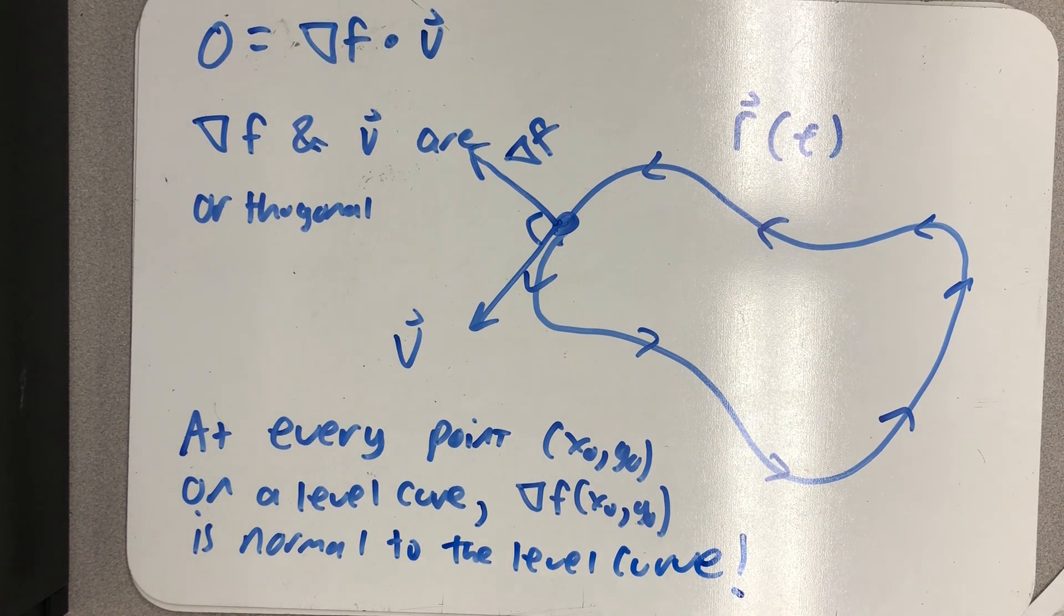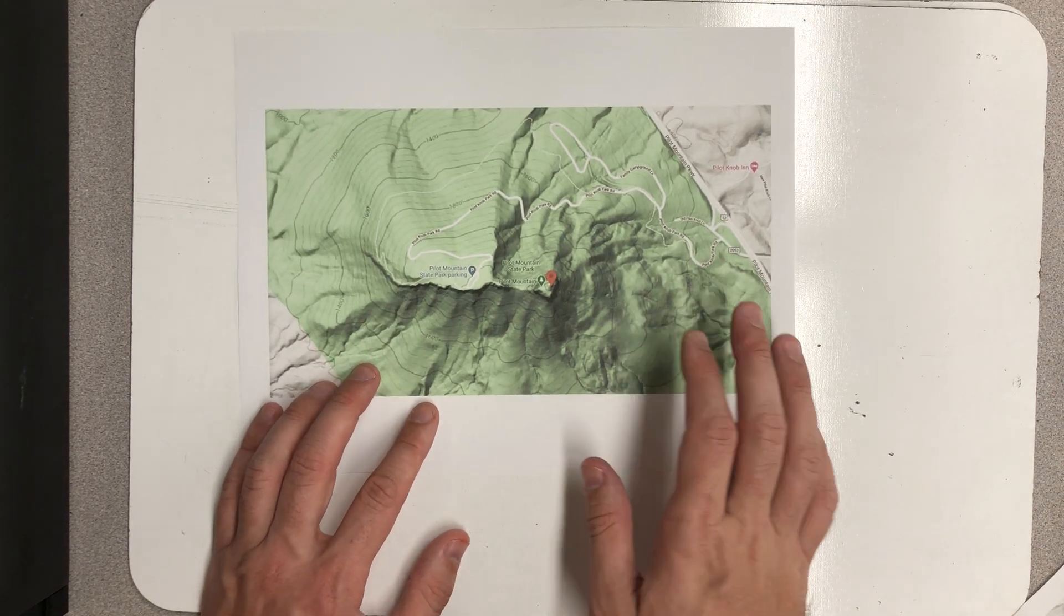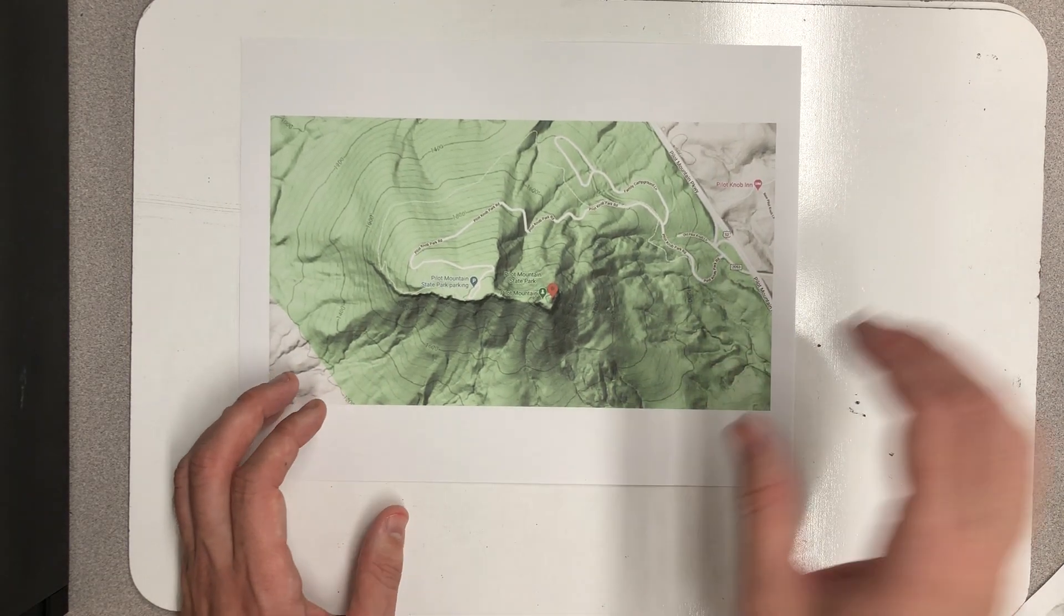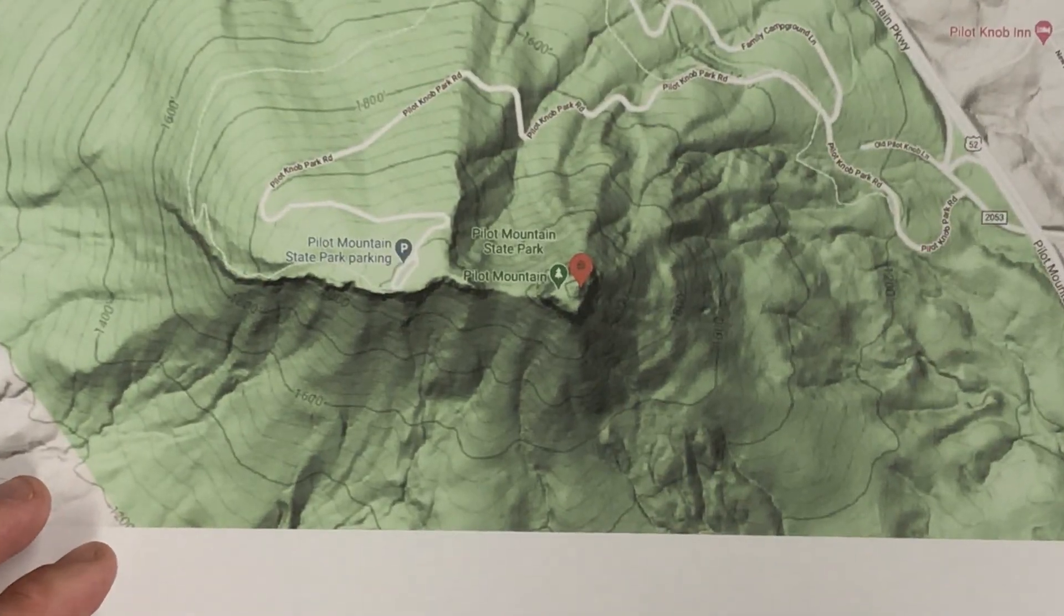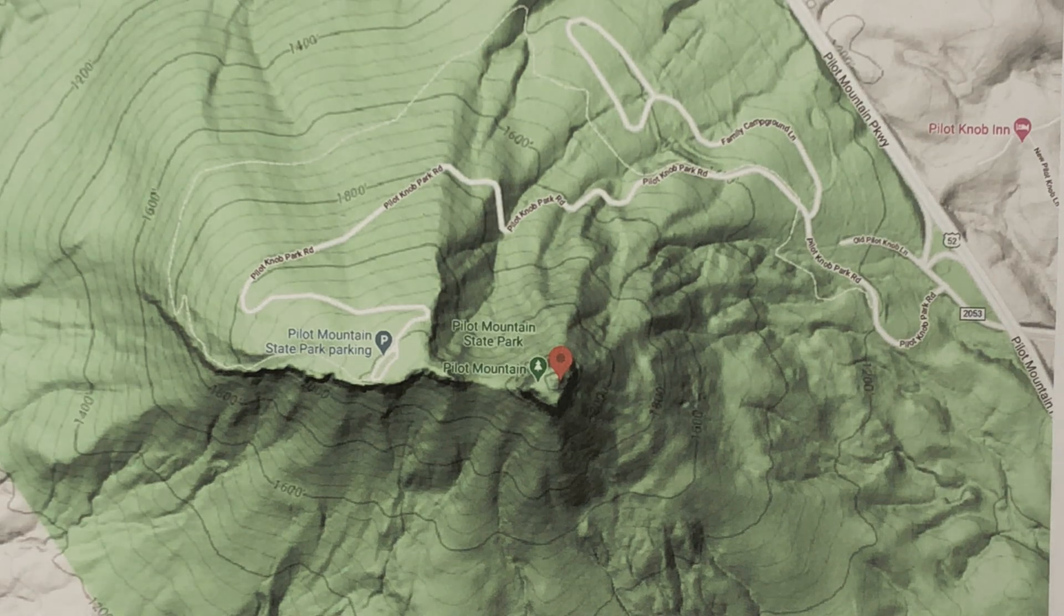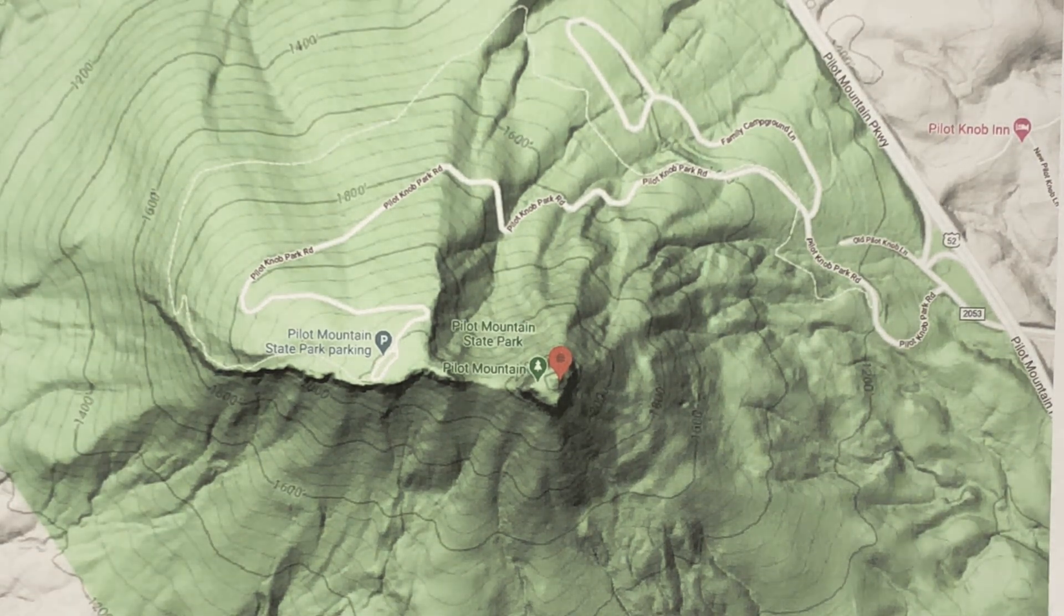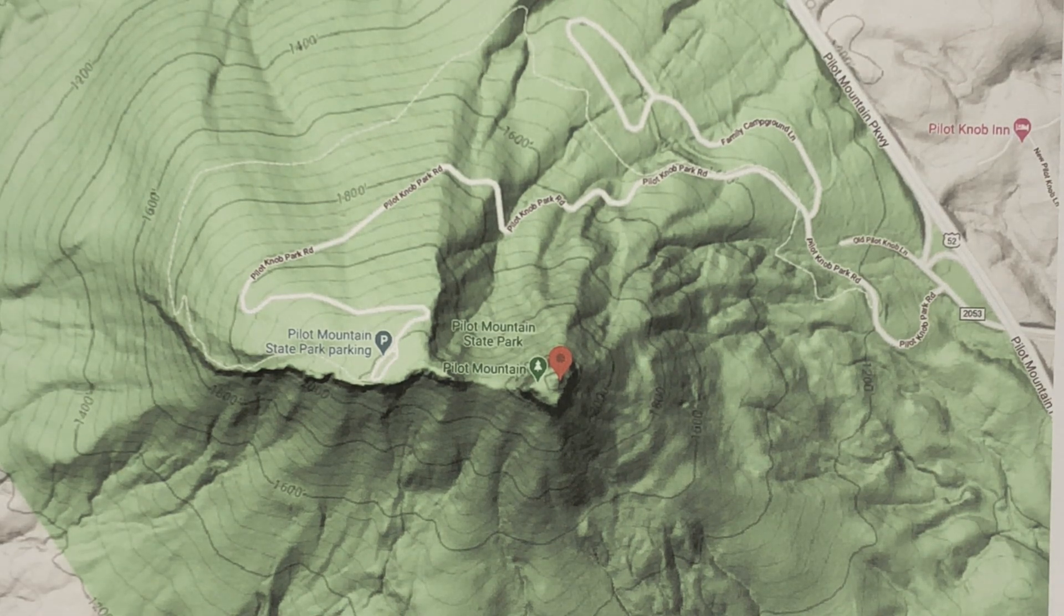So the gradient vector is always perpendicular to a level curve, and we can put that together with things from the previous video. Here I have a map with level curves - a map of Pilot Mountain in North Carolina, one of my favorite places to go. It's an actual mountain that rises fairly well above level ground.